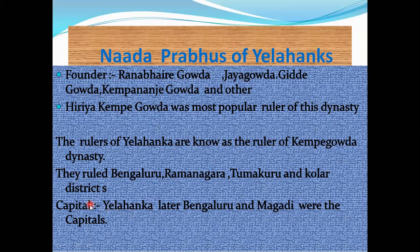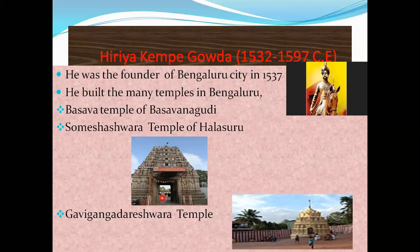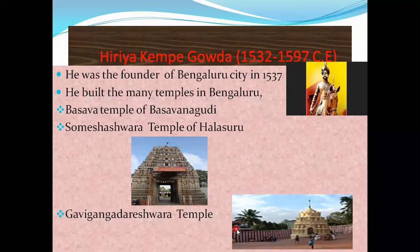The capital of Nada Prabhu was Helhanka, and later Bengaluru and Magadi became capitals. Iriya Kempe Gowda was the founder of Bangalore city in 1537. He built many temples in Bangalore — the Basava temple in Basavanagudi (bull temple), Someshwara temple in Aralsuru, and Gavi Gangadishwara temple. He also built three famous tanks: Dharmabudhi tank, Halsuru tank, and Sampige tank.